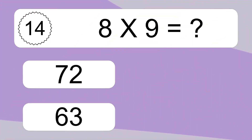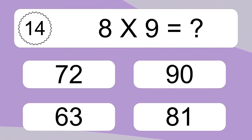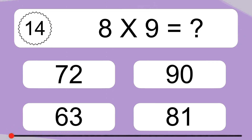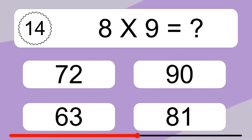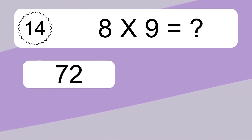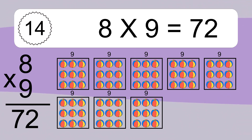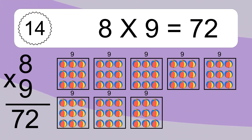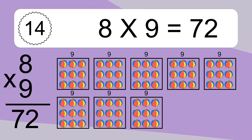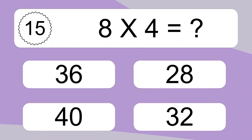8 times 9 equals what? 8 times 9 equals 72. We have 8 boxes and each box has 9 colorful balls inside. If you count all the balls in all the boxes together, you will have 8 times 9 balls. This equals 72 balls.